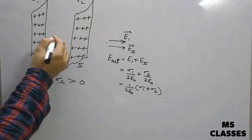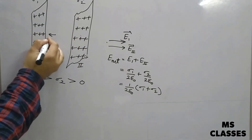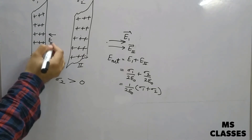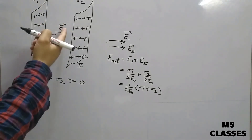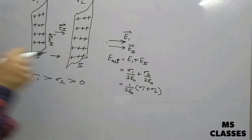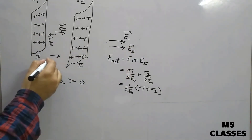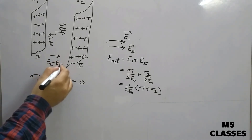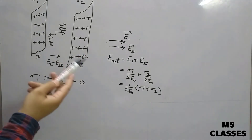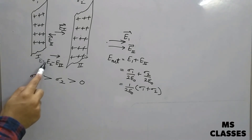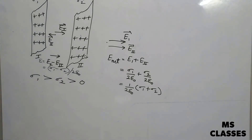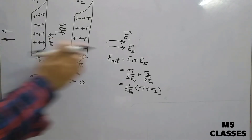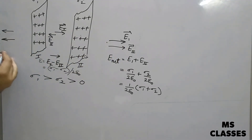For the point between the two sheets, E1 points in the positive x-direction and E2 points in the negative x-direction (opposing each other). Since sigma 1 is greater than sigma 2, meaning E1 is greater than E2, the net effect is in the direction of E1. So the net electric field here is E1 minus E2 = sigma 1 by 2 epsilon naught minus sigma 2 by 2 epsilon naught = (sigma 1 − sigma 2) / 2 epsilon naught.